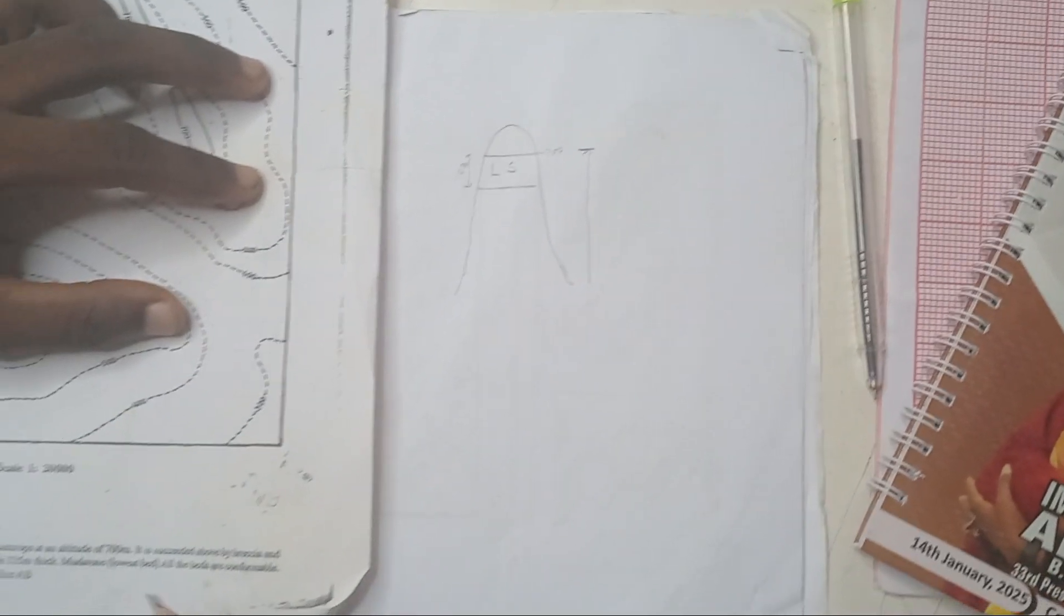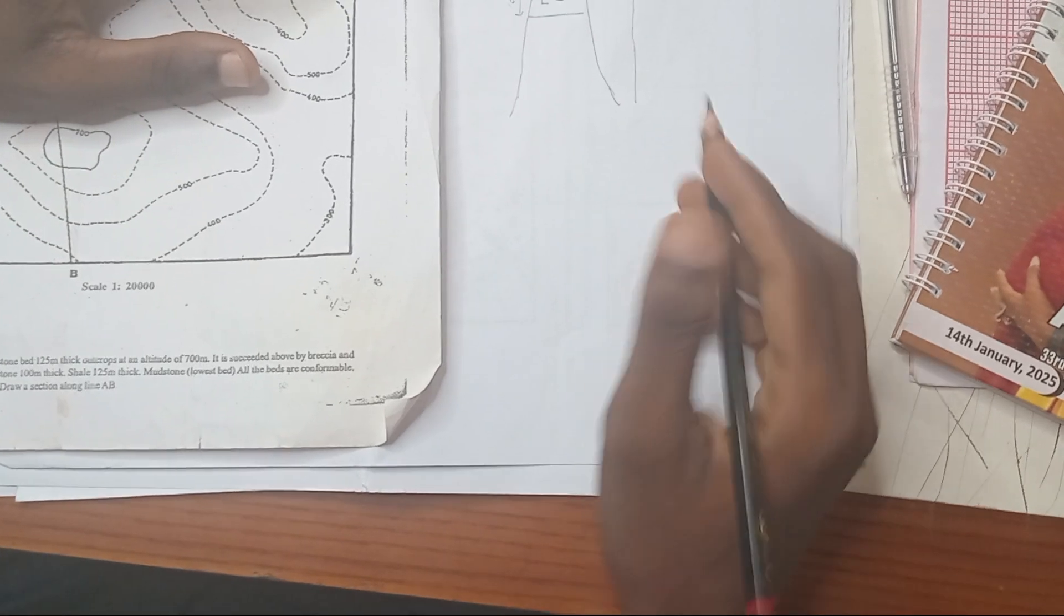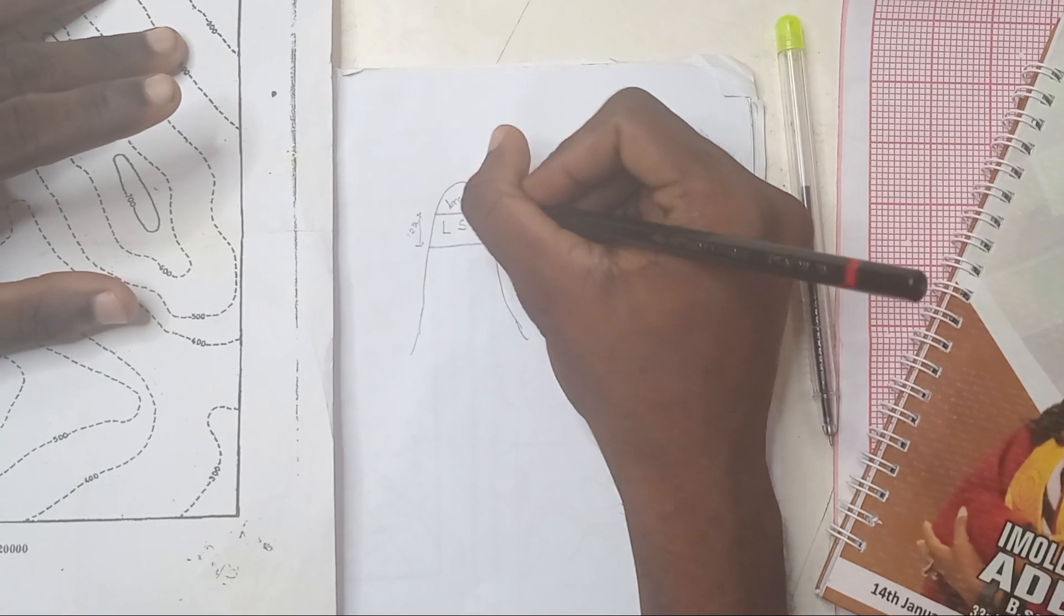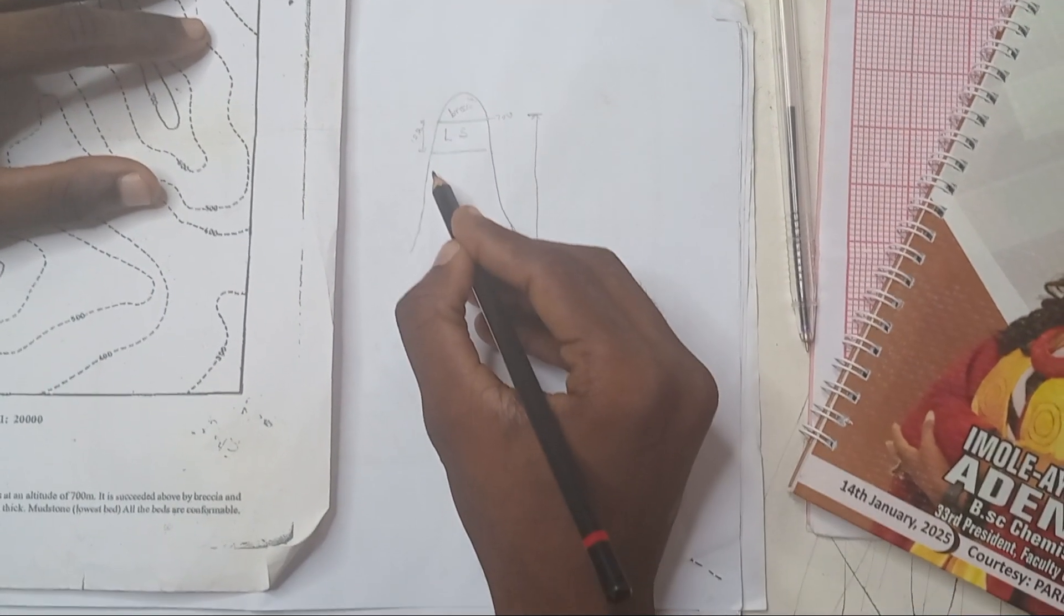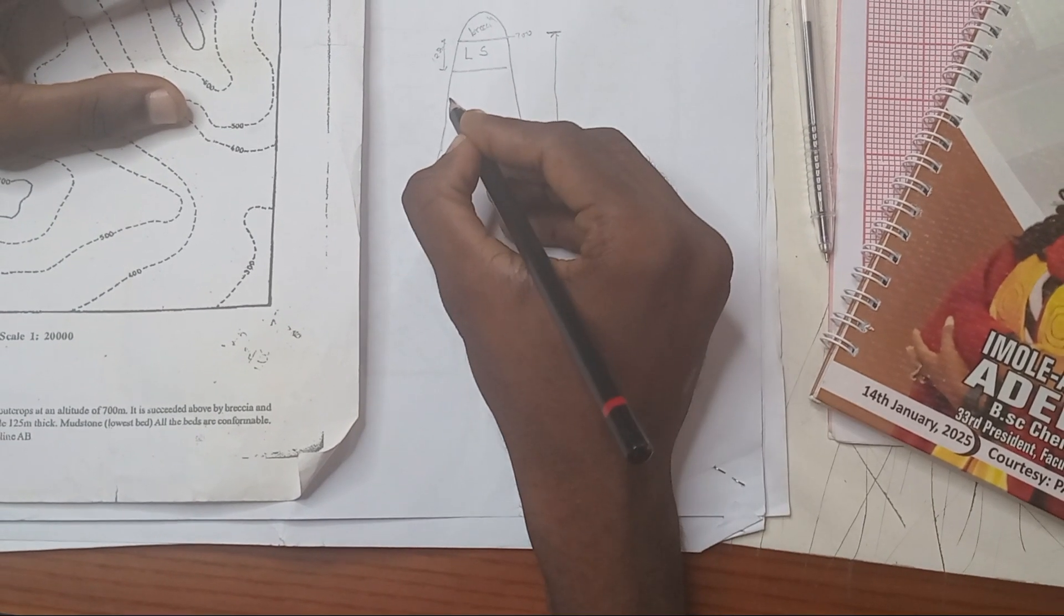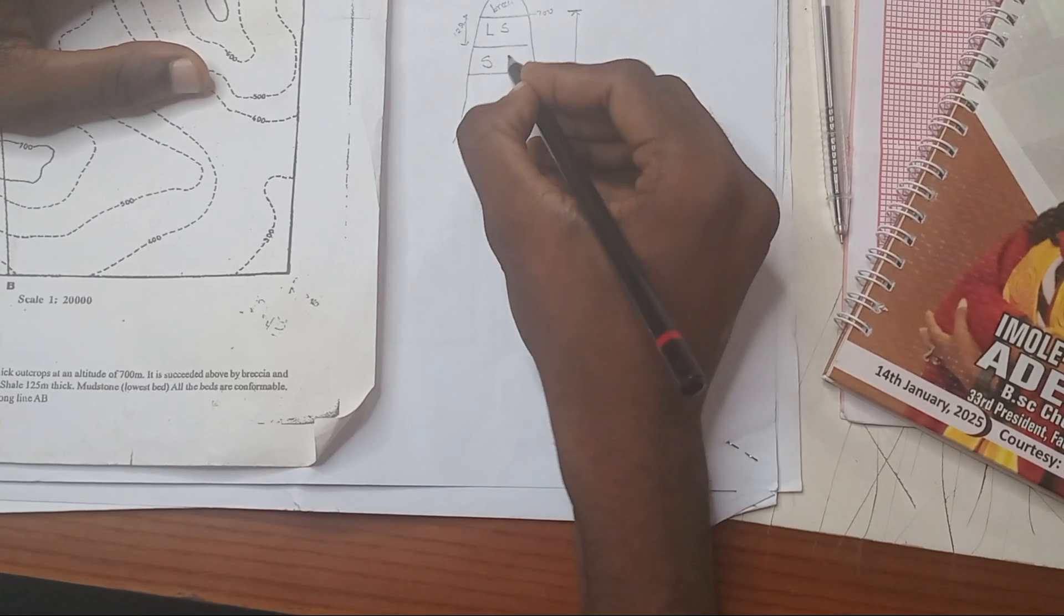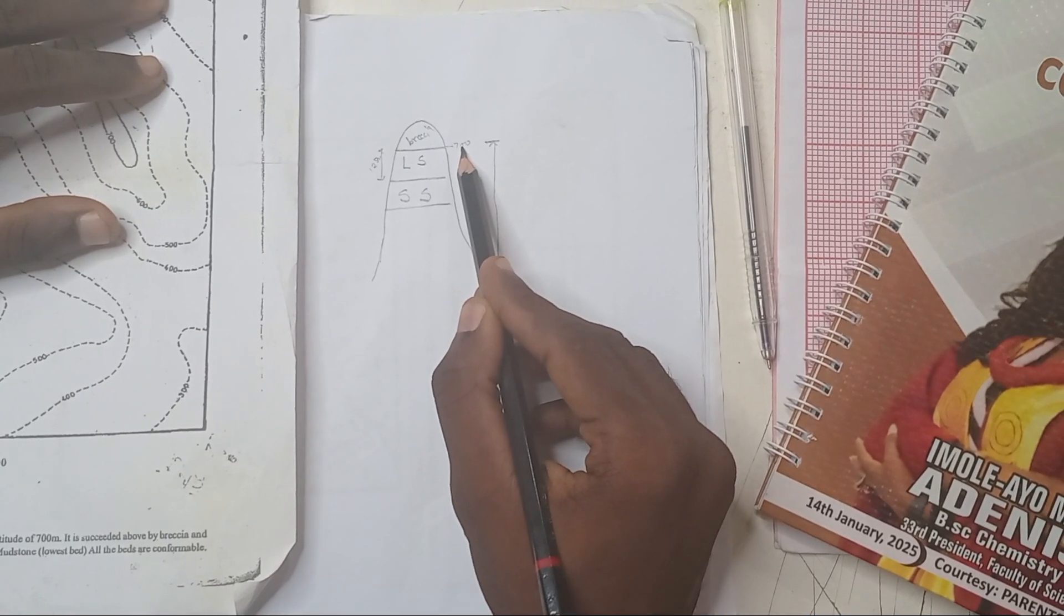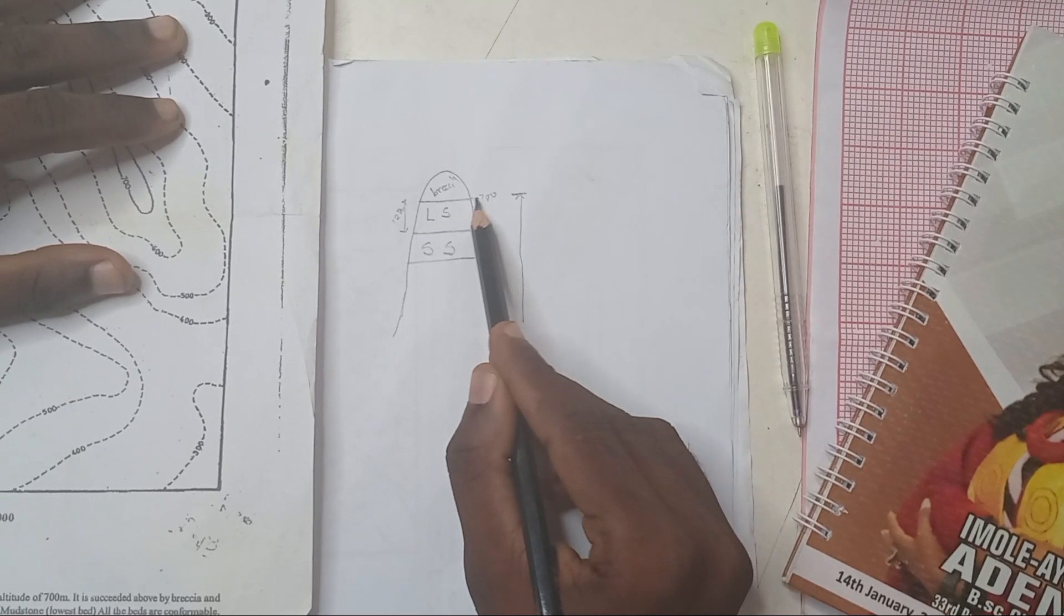Now let's say it is succeeded above by breccia. They didn't give out the thickness of breccia. So breccia, they say above this limestone, it is succeeded above, which means breccia is on top. And below by the following beds. So below it, we have sandstone. That's the first one. And this sandstone is 100 meter thick. But first, let me take your mind back. You say that this is found at 700 meter.